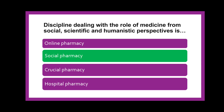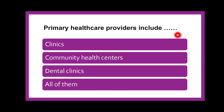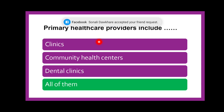Next question: Primary health care providers include dash — whether clinics, community health center, dental clinics, or all of them? The correct answer is all of them. There are 3 to 4 levels — primary, secondary, tertiary, and in some cases quaternary. The primary health care system comprises all of them: general clinics nearby your area, community health centers, dental clinics — the first step before proceeding to hospitals.